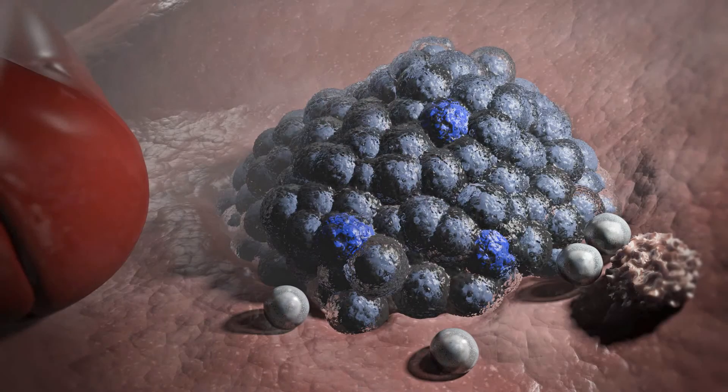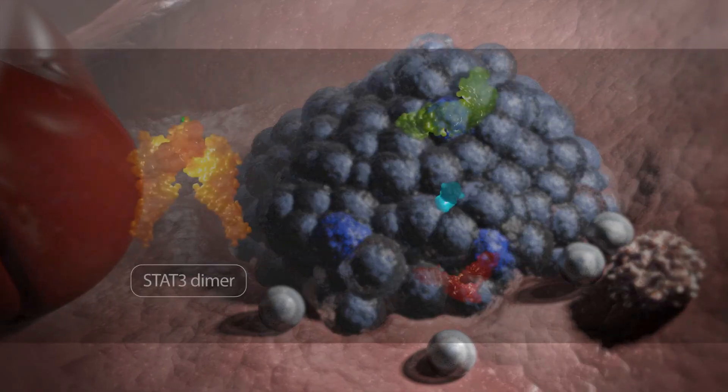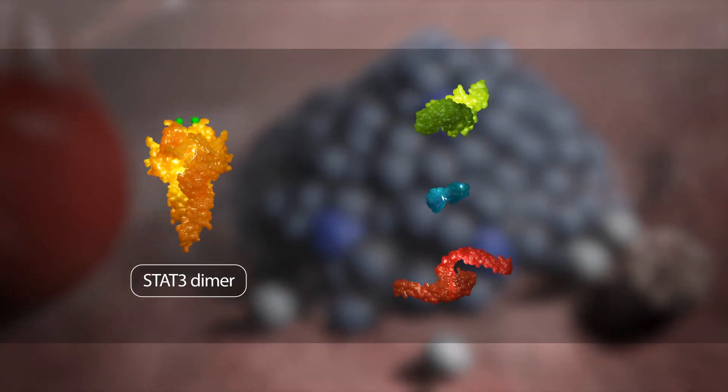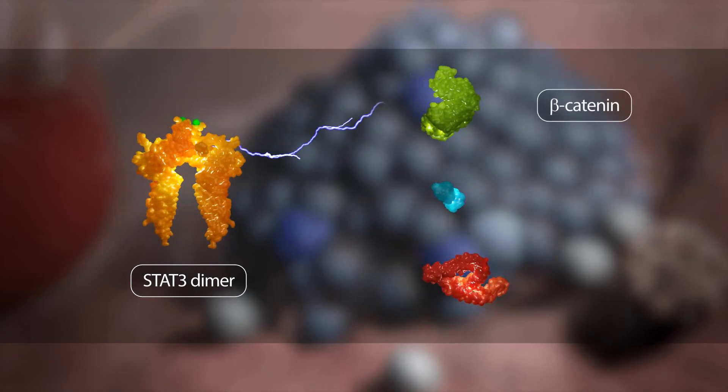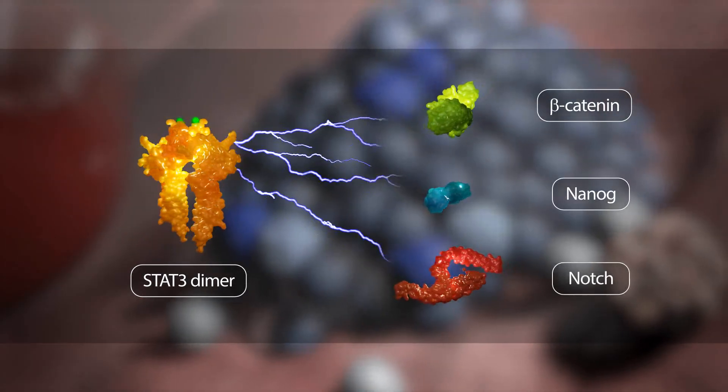In cancer stem cells, one of the actions of over-activated STAT-3 is participating in crosstalk with other stemness signaling pathways, including beta-catenin, NANOG, and NOTCH.